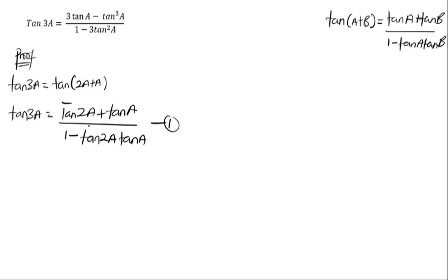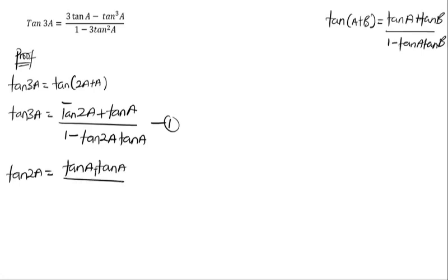From that expansion, tan 3A, which equals tan of 2A plus A, can be written as tan 2A plus tan A all over one minus tan 2A times tan A. This is equation one. Now tan 2A can further be simplified: tan 2A equals tan A plus tan A all divided by one minus tan A times tan A, which gives two tan A over one minus tan squared A. This is equation two.